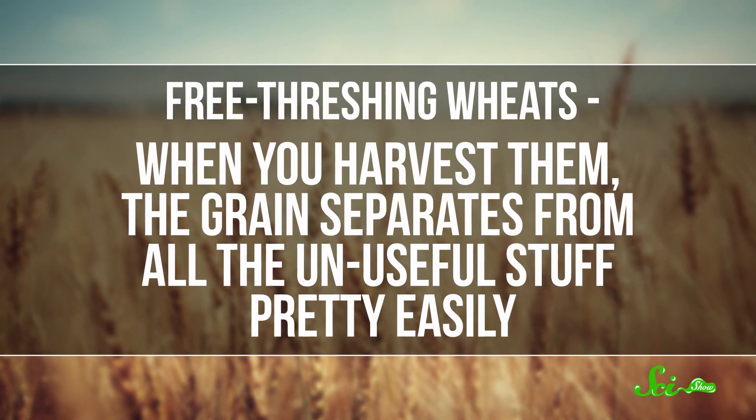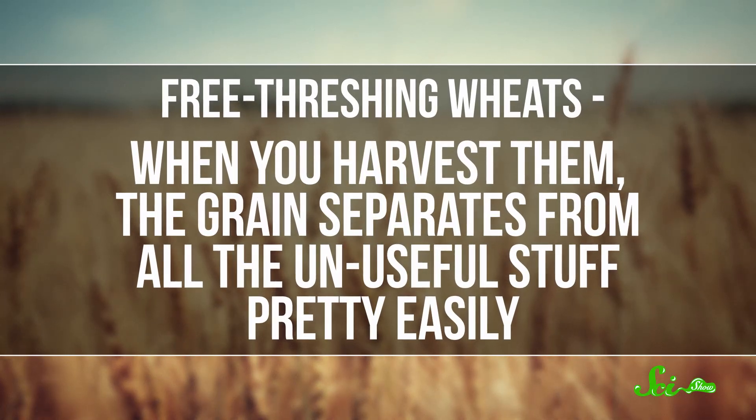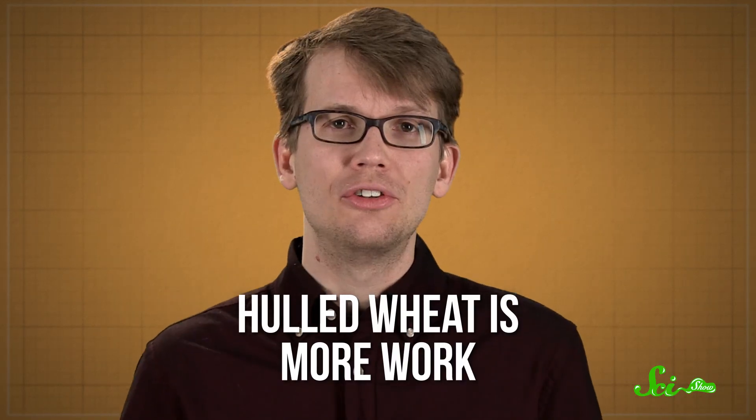Modern bread and durum wheats, on the other hand, are free-threshing wheats, meaning that when you harvest them, the grain separates from all the unuseful stuff pretty easily. Whereas the hulled spikelets of spelt, emmer, and einkorn need to be dried, heated, or milled before you can break open the hulls and get at the good stuff. So it's not hard to see why we switched. Hulled wheat is just more work.